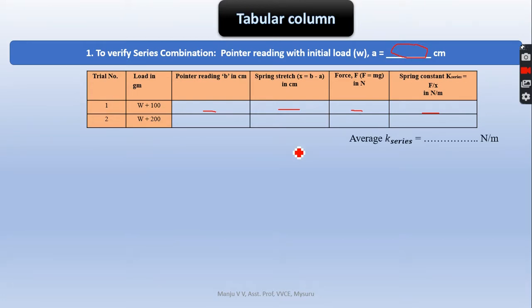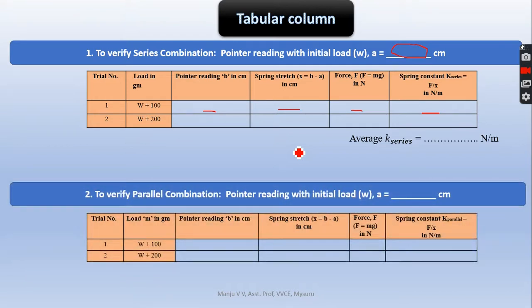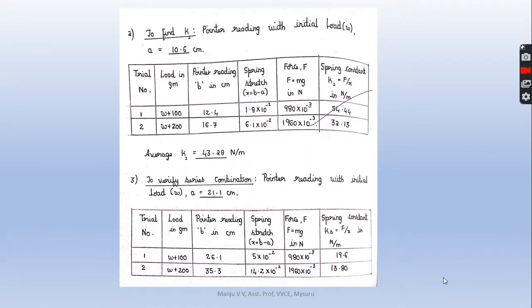Coming to the parallel combination, with the dead load call it as A, and plus 100, note the extension. Plus 200, the extension. And take the difference between A and B, call it as x, the spring stretch. Determine the force and spring constant for parallel. And take the average of these two and call it as K parallel. Now this is the tableau column which we have performed the calculation.